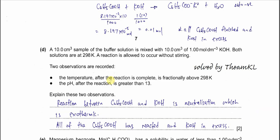Part D. A 10 cm^3 sample of buffer solution is mixed with 10 cm^3 of 1 mol per dm^3 KOH. Both solutions are at 298 Kelvin. The reaction is allowed to occur without stirring. Two observations recorded: temperature slightly higher, and the pH is greater than 13.